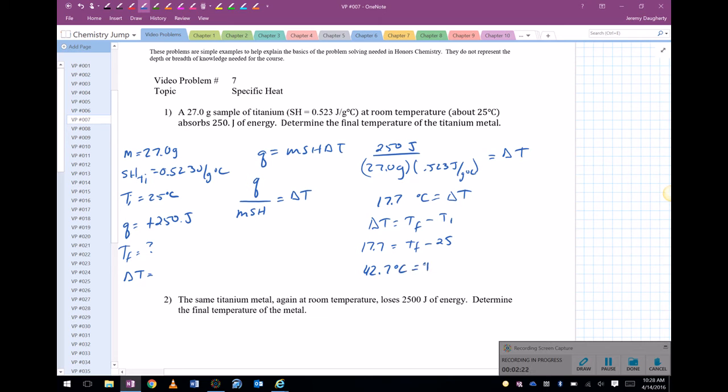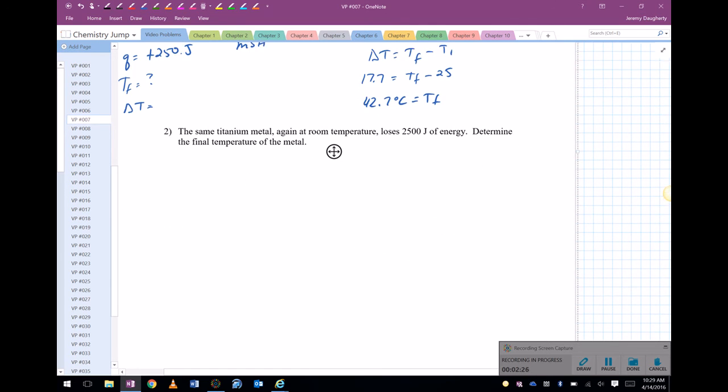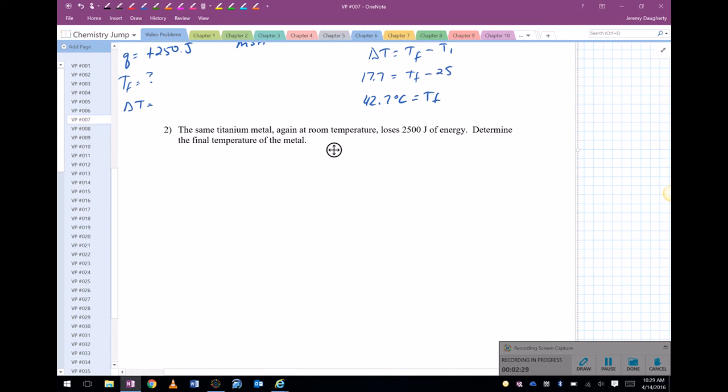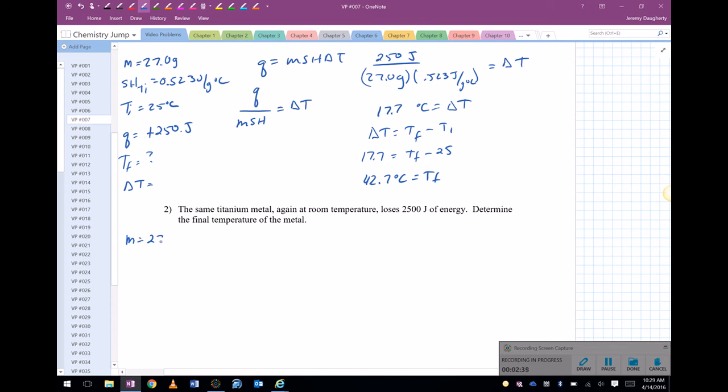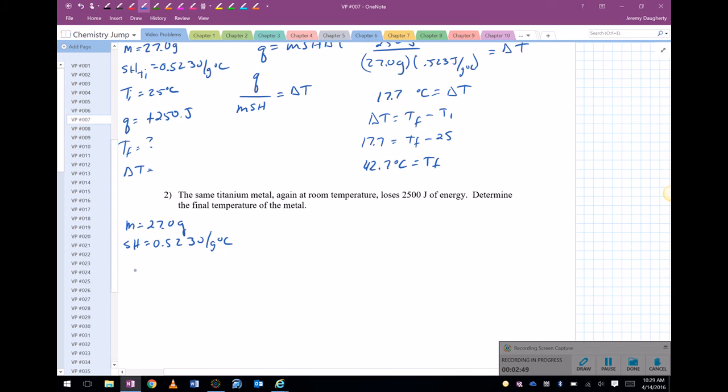Let's look at the next one. The same titanium metal, again at room temperature, loses 2500 joules of energy. Determine the final temperature of the metal. So it's the same mass, 27 grams, same specific heat capacity 0.523, same initial temperature. And now my Q, I have lost 2500 joules of energy. Again I'm looking for the final temperature, but I'm going to use delta T.